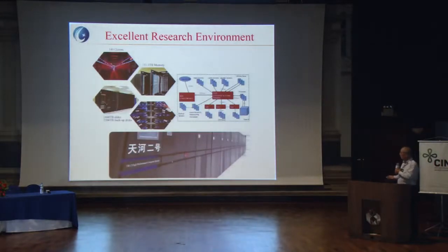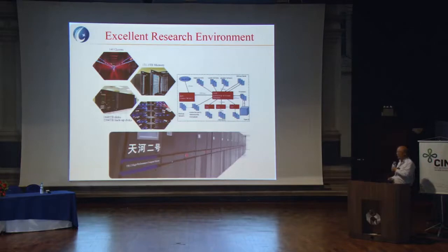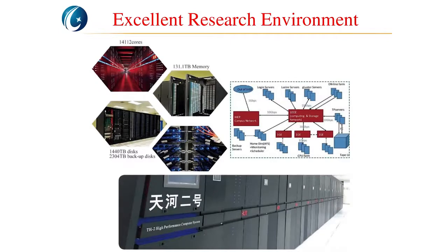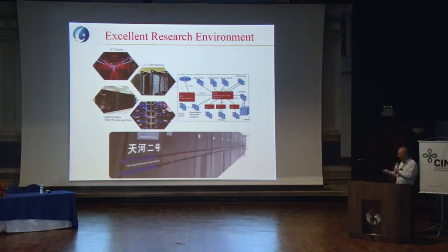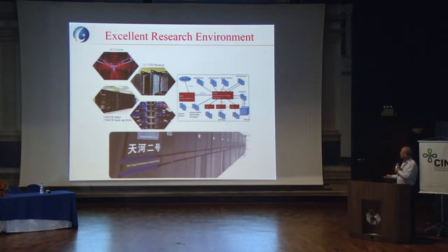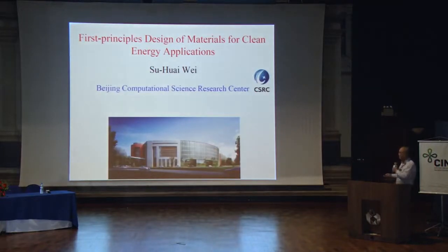We have very good facilities. For example, we have the Tianhe-2 supercomputer in our center. This used to be the world's fastest supercomputer, but now it is not. It is still quite large — it can have about 200 to 300 people working simultaneously using this computer.